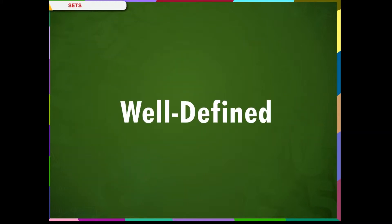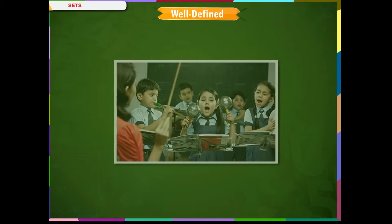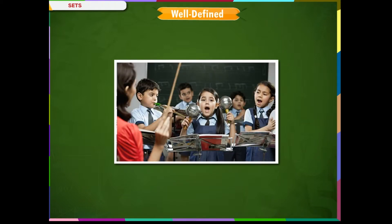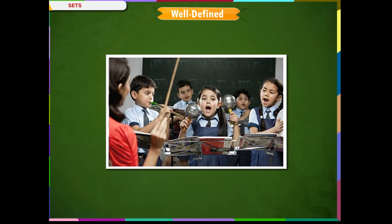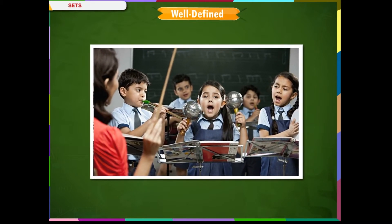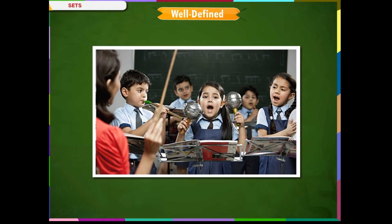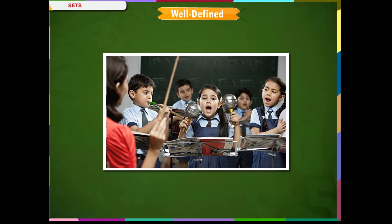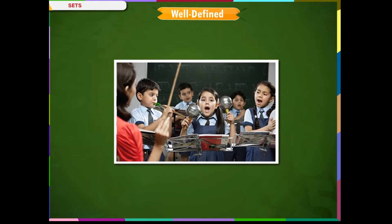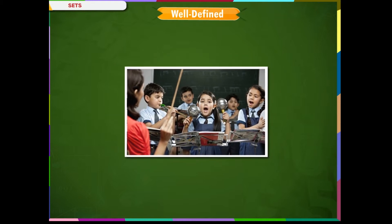Well-defined means it must be absolutely clear which object belongs to the set and which does not. For example, a collection of singers of class 6 is a set. A collection of good singers of class 6 is not a set, because 'good' is an adjective and there is no definite rule to assess the word 'good'. To some, a singer may be good; to some, he may not be.